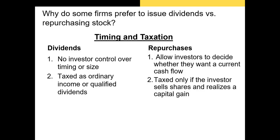Let's discuss further differences between dividends and repurchases. First, in terms of timing: with dividends, the investor doesn't control the timing or the size of the cash flow — the firm sets the dividend and tells you when you'll receive it. With a repurchase, the firm tells investors it's willing to buy back shares at a set price, and you can decide whether or not you want to sell at that price. So there's a little more flexibility with repurchases.